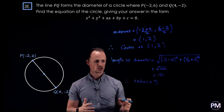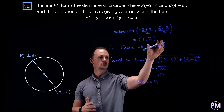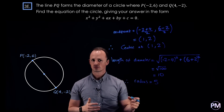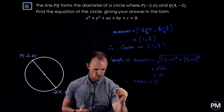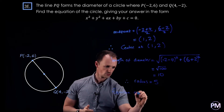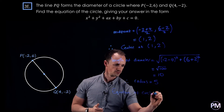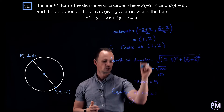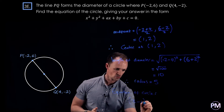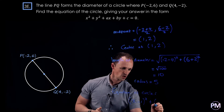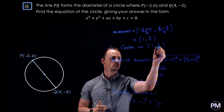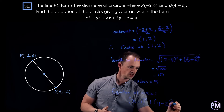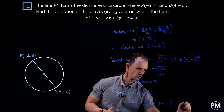So now let's consider what we know. The centre of the circle is at (1, 2) and the radius is 5. That means we can write down the equation of the circle: x minus 1, all squared, plus y minus 2, all squared, equals the radius squared, which is 25.